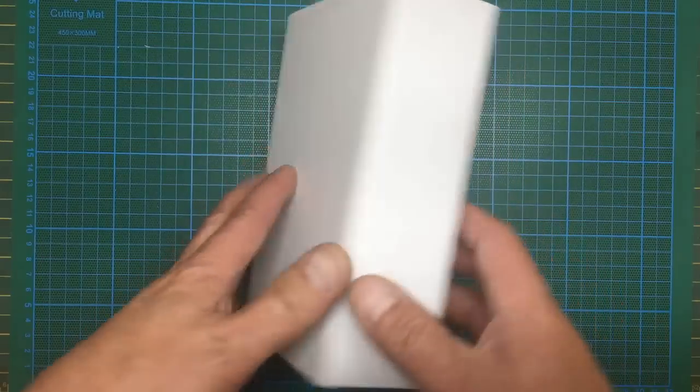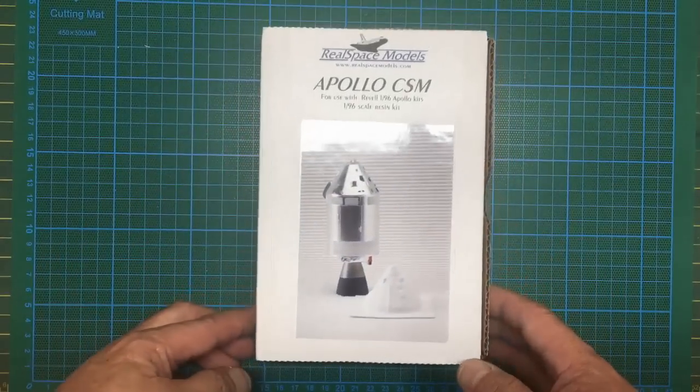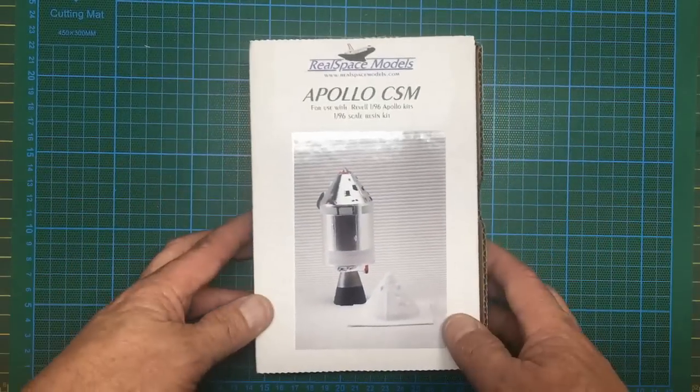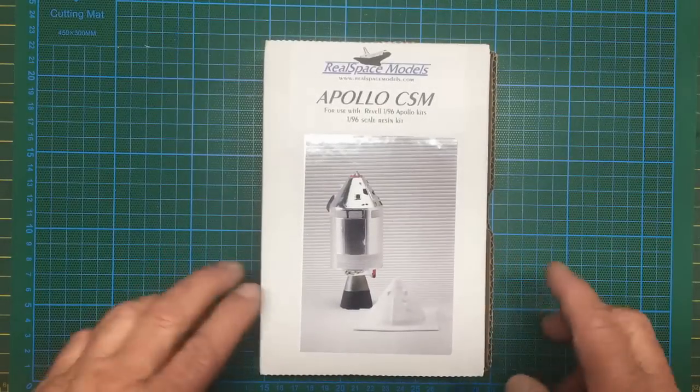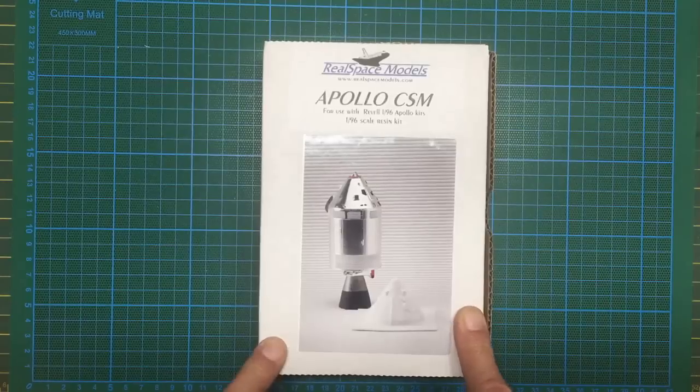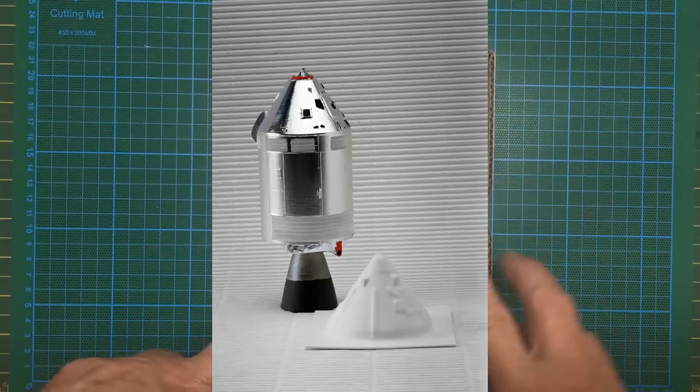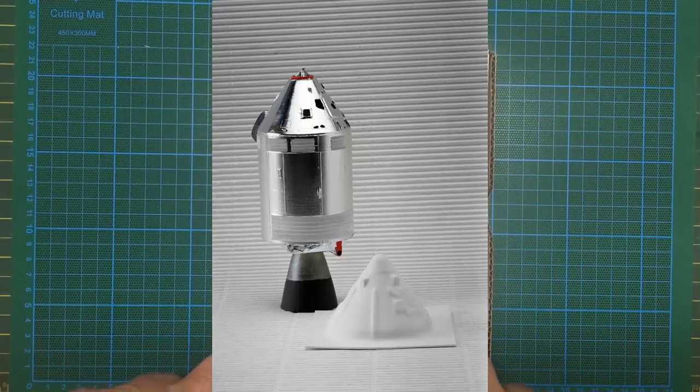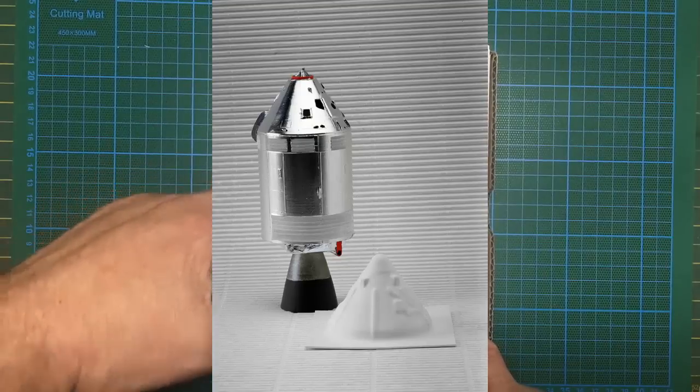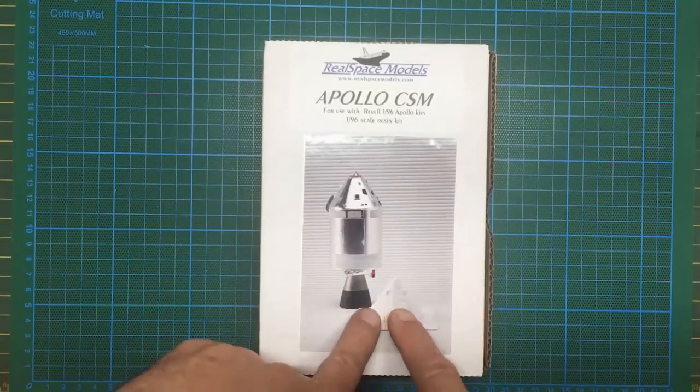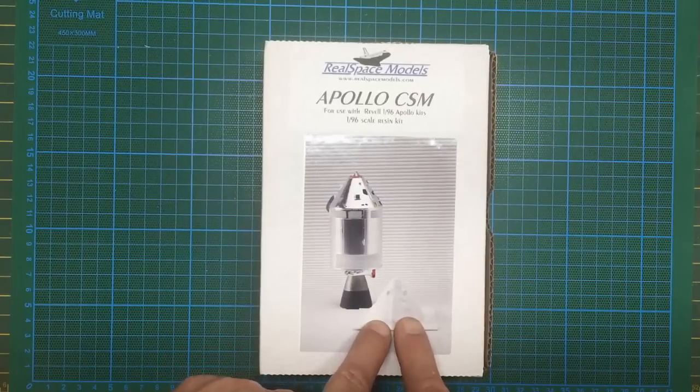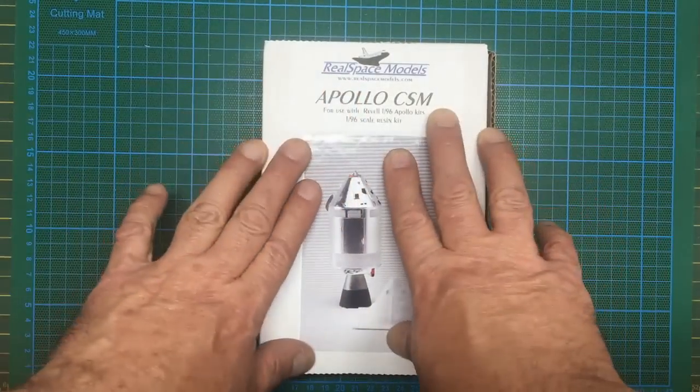It's the Real Space Models Apollo CSM, command service module, for use with the Revell 1/96 kits. This in itself is a 1/96 scale resin kit. In here we're going to get the command module, the command service module, our engine, and our boost protective cover.